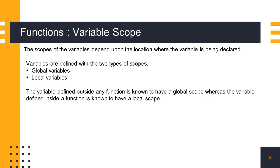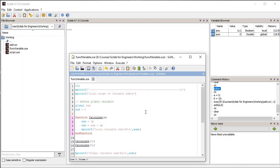Another important aspect is to understand the scope of the variables used in the function being called. Variables defined inside the function are local to that function and termed as local variables. Variables defined in the Scilab environment with the 'global' keyword are global variables which can be accessed by any function. Let us see how local and global variables are defined in the program.